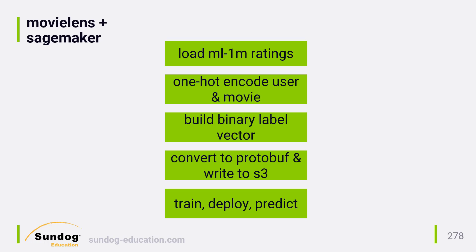Most of the work is actually in getting the MovieLens data into a format that SageMaker can work with. Factorization machines want to work with high-dimension datasets, so we need to one-hot encode each rating. Let's say we have 500 users and 1,000 movies in our dataset. The idea is to encode ratings as 1,500 binary values, where the first 500 values represent each user and the next 1,000 values represent each movie. We'd only set two values in those 1,500 to one — one for the user and one for the movie that was rated. The rest are all set to zero. All those zeros are a huge waste of space, so we use a sparse tensor to store each one-hot encoded rating in a much more compact format.